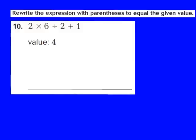Let's take a look at question number 10. Question 10 says to rewrite the expression with parentheses to equal the given value. They give me the expression 2 times 6 divided by 2 plus 1, and I have to rewrite it with parentheses so that the value equals 4. My first step is to evaluate the expression without parentheses.